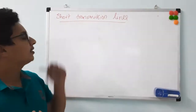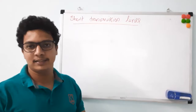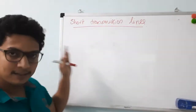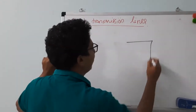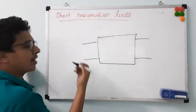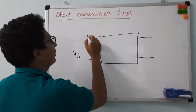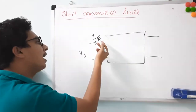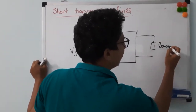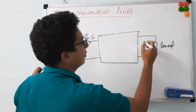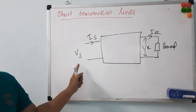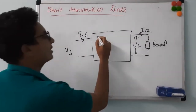Now, let us represent short transmission lines. You have already studied two-port systems in your network theory. We will consider a transmission line as a two-port system, where you have two inputs and two outputs. The inputs are Vs (sending end voltage) and Is (sending end current). The output values are Vr (receiving end voltage) and Ir. This is how we represent a transmission line as a two-port network.